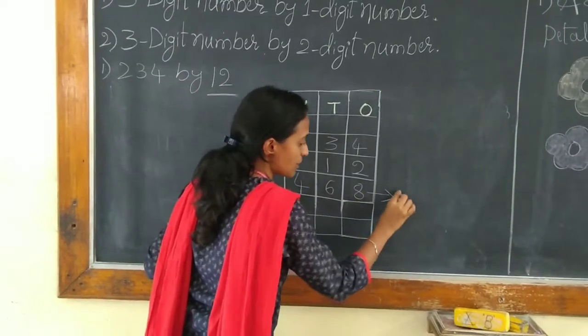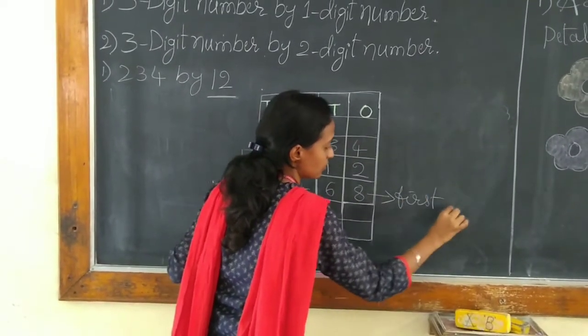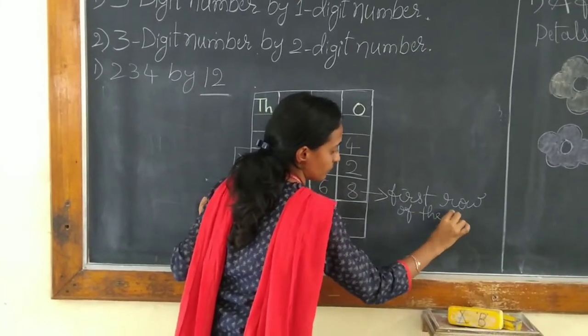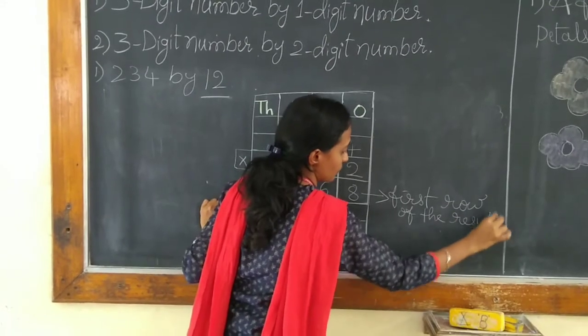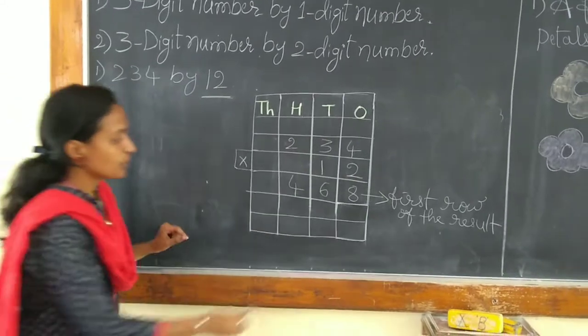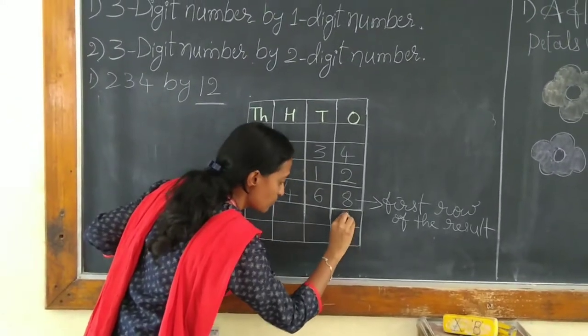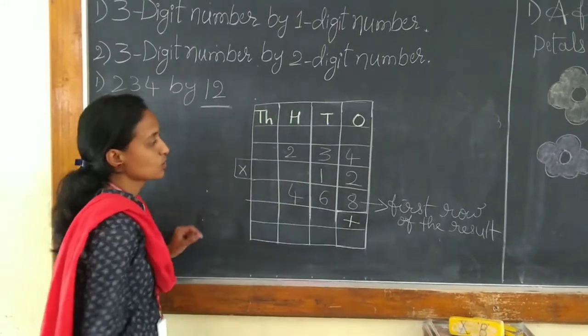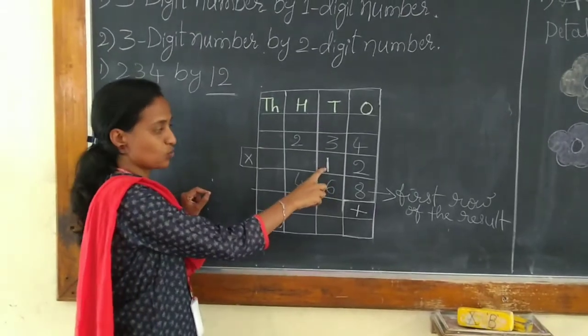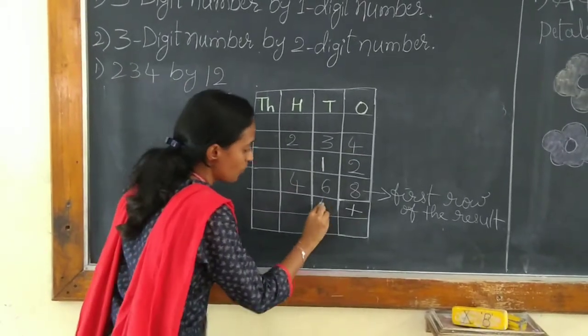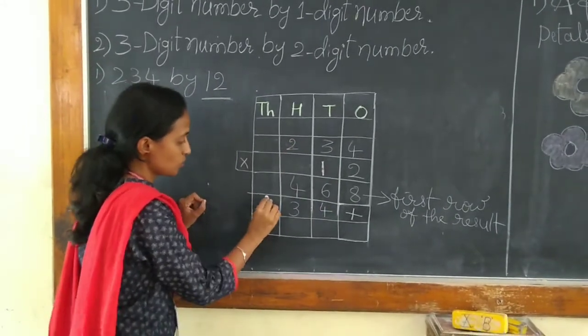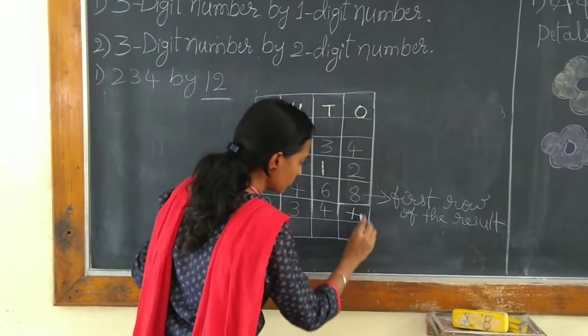This is known as 1st row of the result. When we are multiplying the 2-digit number, first we need to place here 0 or put it as empty. So, let us multiply the 2nd digit of the multiplier which is 1. 1 times 4 is 4. 1 times 3 is 3. 1 times 2 is 2.